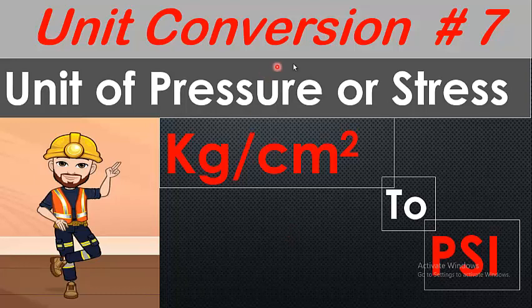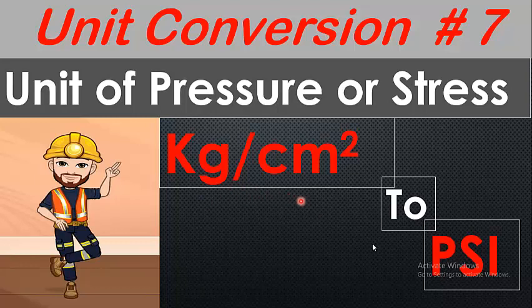Hello guys, welcome back to my unit conversion series. This is video number seven of unit conversion. In the previous video we discussed the relation between megapascal and kilonewton per millimeter square. In this video we are going to see the relation between kg per centimeter square to psi. These units are mostly used for compressive strength of concrete in mechanics of structure or in RCC structures.